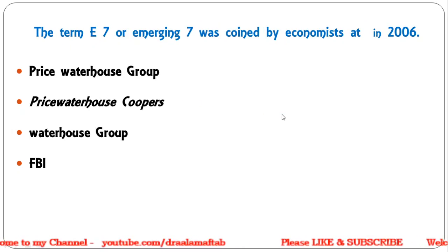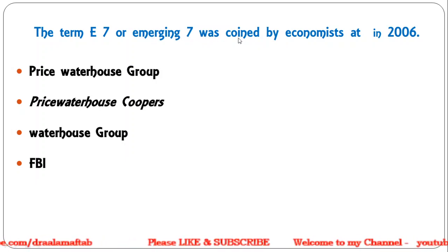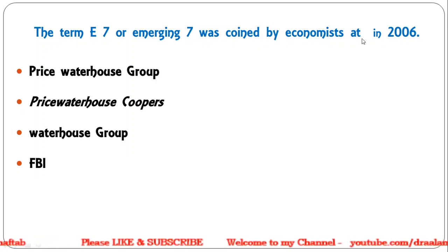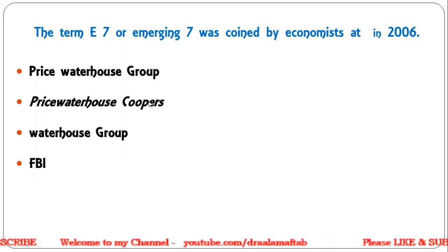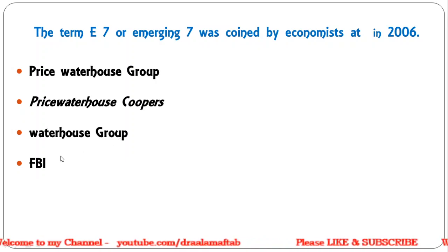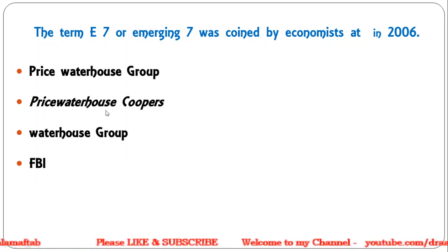The next question: the term E7 or Emerging 7 was coined by economists at which organization in 2006? Options are Price Waterhouse Group, Price Waterhouse Coopers, Waterhouse Group, or FBI. The correct answer is Price Waterhouse Coopers, or PWC.